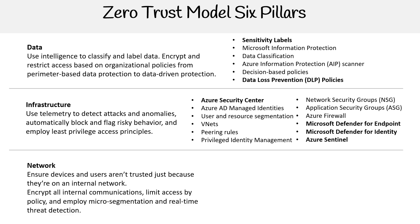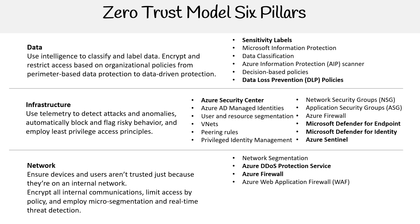The last pillar is network. Ensure devices and users are not trusted just because they're on an internal network, encrypt all internal communications, limit access by policy, and employ micro-segmentation and real-time threat detection. Here we can do network segmentation, Azure DDoS Protection Service, Azure Firewall, Azure Web Application Firewall also known as WAF, Azure VPN, Azure AD Proxy, Azure Bastion, and SSL/TLS. That's the Zero Trust model's six foundational pillars and some of the related services associated with each pillar.